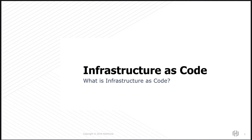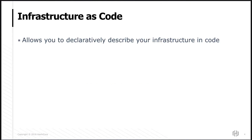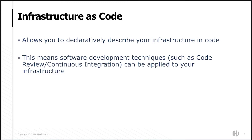This talk is called Infrastructure as Code with Terraform Azure. So, what is Infrastructure as Code? Infrastructure as Code allows you to declaratively define your infrastructure such that it's reproducible at any time. This means that you can apply standard development techniques to it — things like code review, pull requests, and continuous integration — so that you can be confident in the changes you're applying.